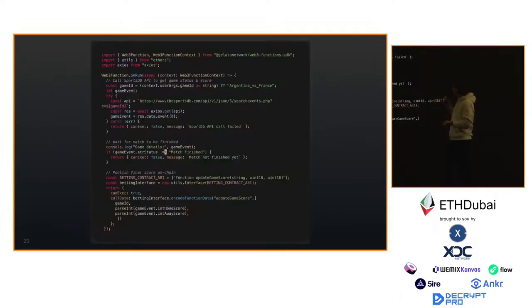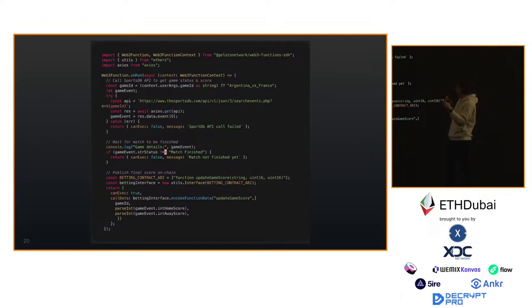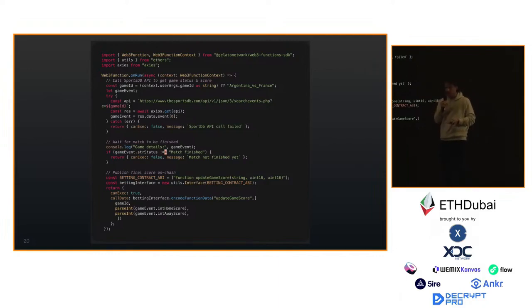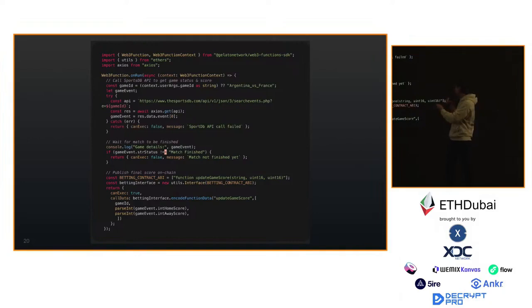Here's some code — we have the Web3 Functions SDK. It's just this Web3 function runner and you configure how and when it's called — it can be event-based. In this example we simply fetch data from a public sports data provider and we want to post the result of a football game on-chain, maybe for a betting dApp or prediction market. Typical TypeScript — you fetch the data from the API, instantiate the contract, serialize the payload for the smart contract call, and return your object saying it can be executed. Your Web3 function will then use the Gelato network to post the data to your smart contract.